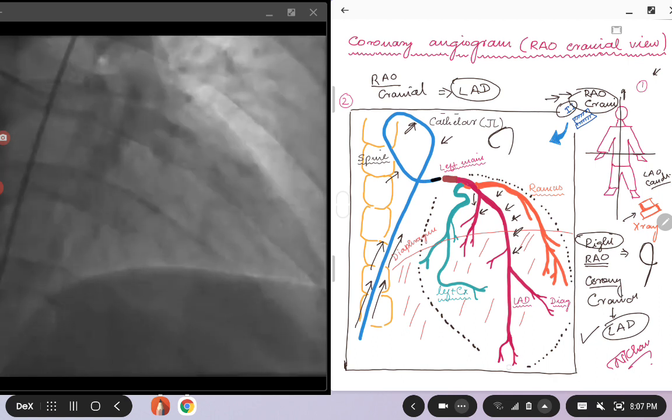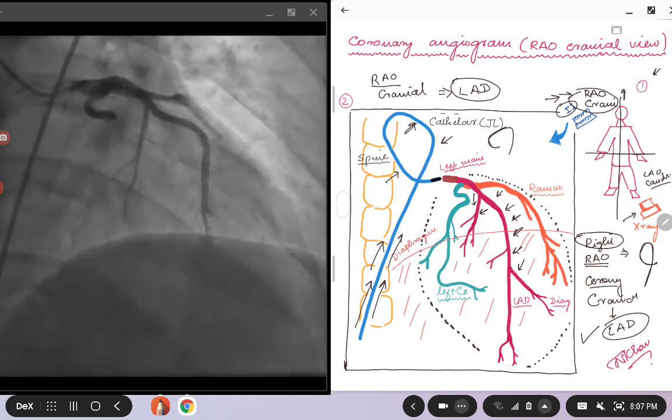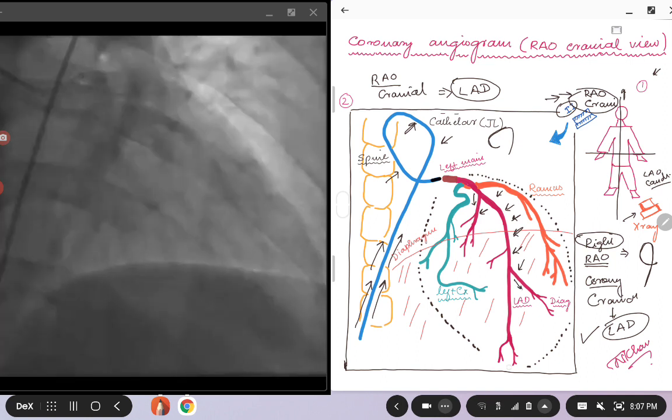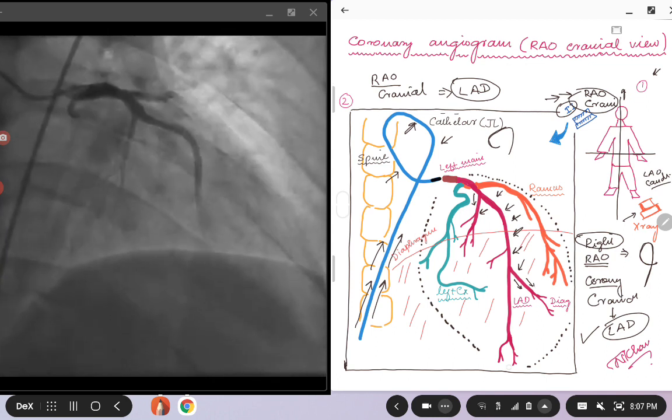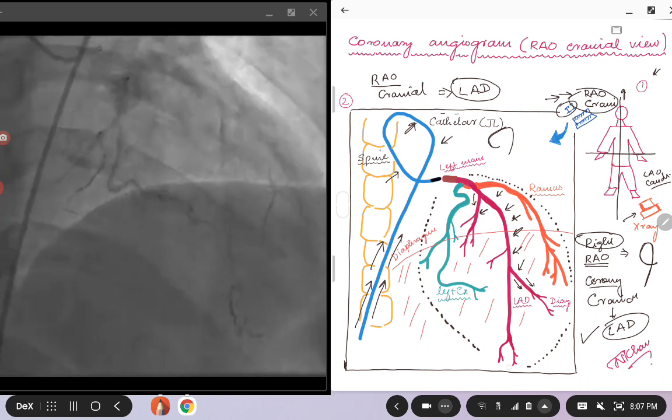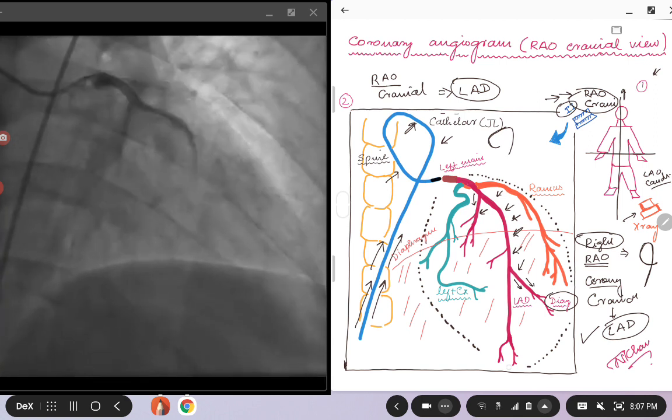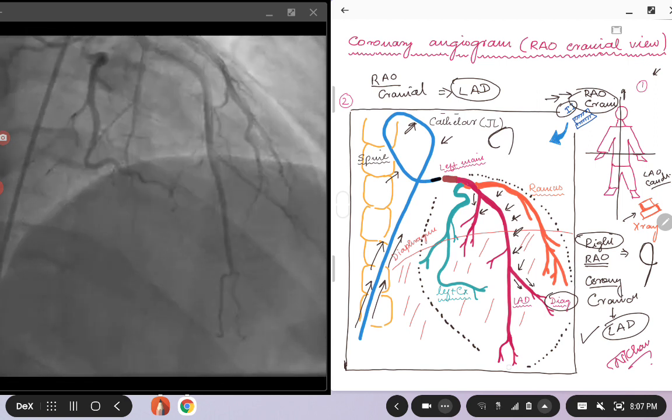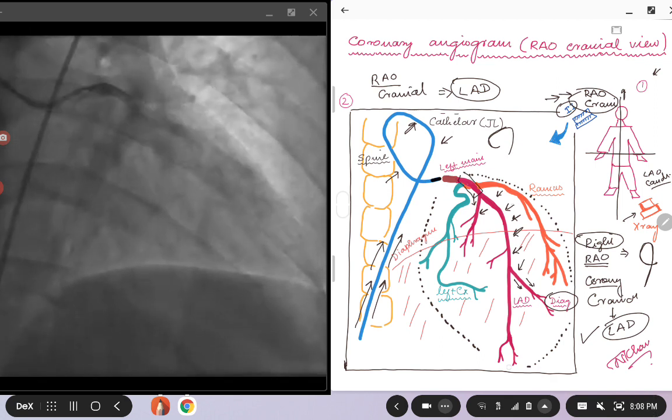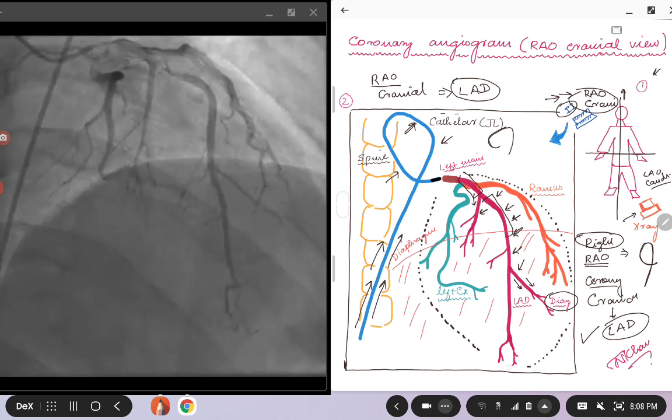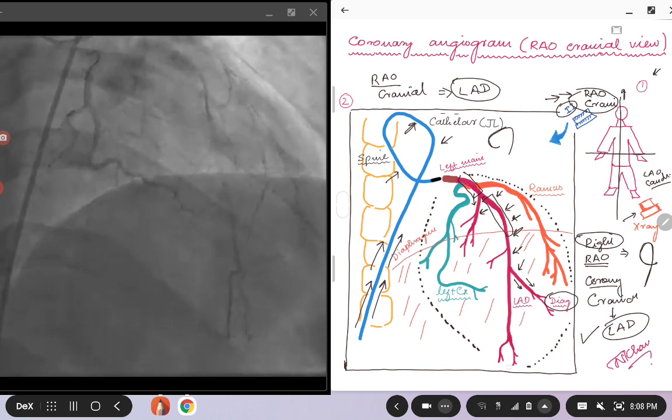What I want you to focus is that right around four o'clock position, you see this artery coming out from the LAD going towards the right side of your screen. That's your diagonal branch. This view, cranial view, will help you look at the septal perforators, the LAD, the prox LAD, the mid LAD, the mid to distal LAD, and also you will be able to look at the diagonal branches.